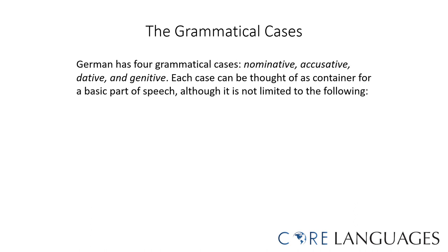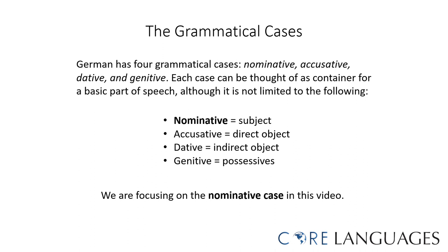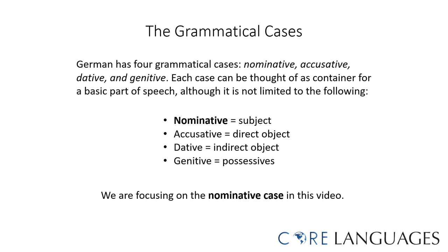German has four grammatical cases: the nominative, the accusative, the dative, and the genitive. Each case can be thought of as a container for a basic part of speech, although it is not limited to the following. The nominative can be considered the subject case — the subject of a sentence is usually in the nominative. The accusative case is the case of the direct object. The dative is the case of the indirect object. The genitive is the case of possessives. In today's video, we are going to focus on the nominative case, or der Nominativ.